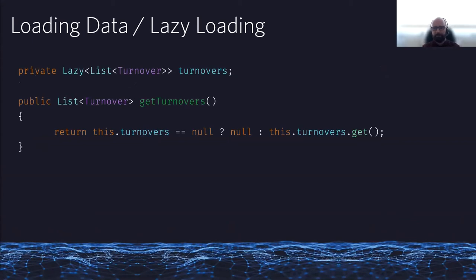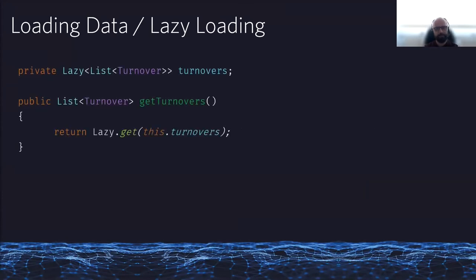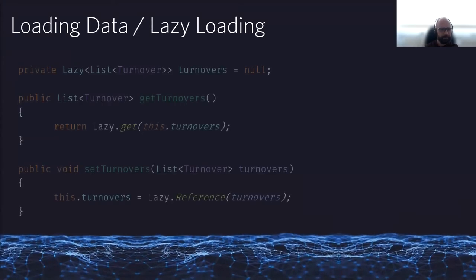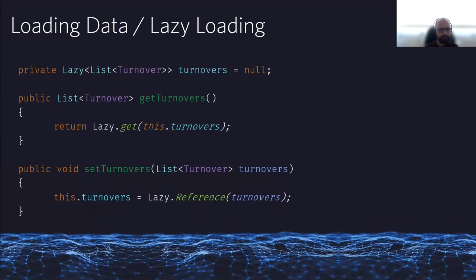The lazy aspect is an internal technical detail that we don't want callers to see. So we hide access to the Lazy type inside getters and setters — null-check if turnovers is null then return null, otherwise call turnovers.get() to get the list. There's a convenience method so you don't have to write the null check every time: just call Lazy.get() and pass the reference. For the setter, just wrap it in a Lazy reference. From the outside caller's perspective it's just a plain POJO with getters and setters.